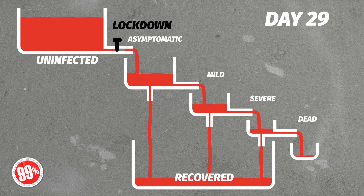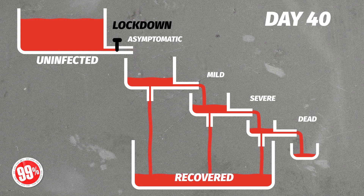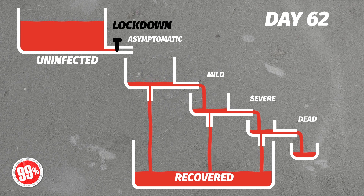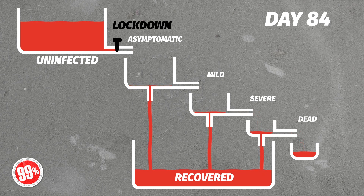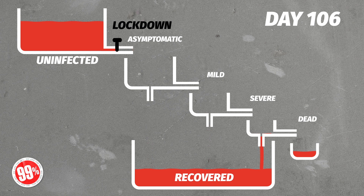There are simply no new infections after that, but there are still a lot of people in the system. You can see first the number in the asymptomatic vessel declines, then the number in the mild vessel, and then finally the vessel for people with severe symptoms empties out. By the time we've finished, only about a quarter as many people have died as last time.